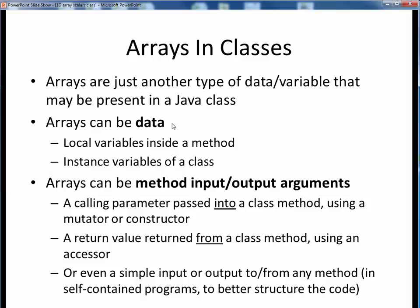Arrays can be used as data in classes, either as local variables inside any method or as the instance variables of some class. Arrays can also be the inputs or outputs of any method. For example, we might need to pass an array into some method using a mutator or a constructor, or return an array from some method such as when using an accessor, or simply pass arrays in and out of methods to better structure our code internally.